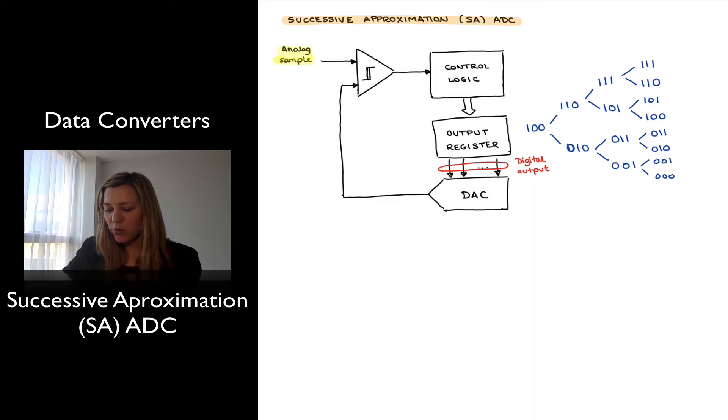So basically, I'm going to start at the point where my most significant bit is equal to one, and all the other bits are set to zero, so it's the midpoint between zero and the full-scale range. And I'm going to compare that to my analog sample.